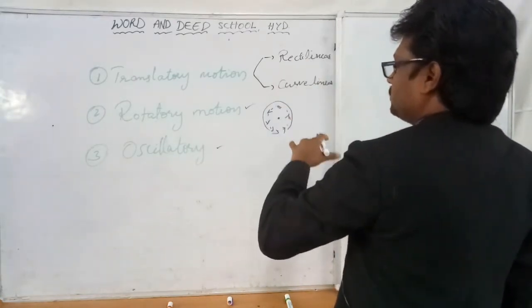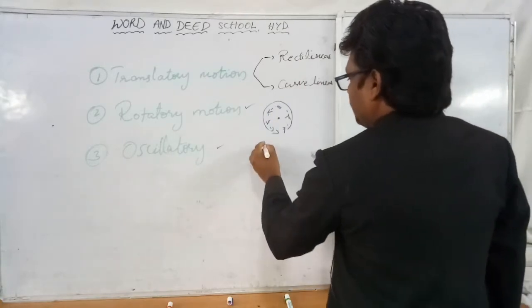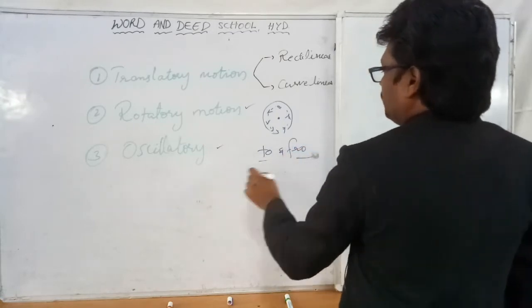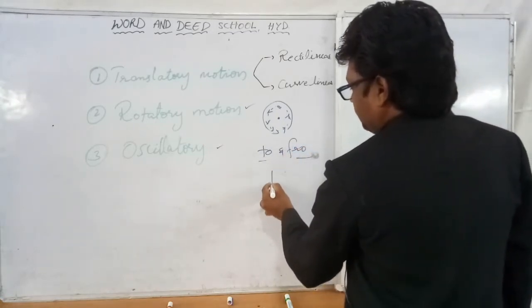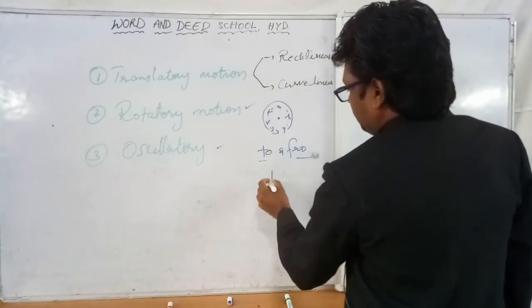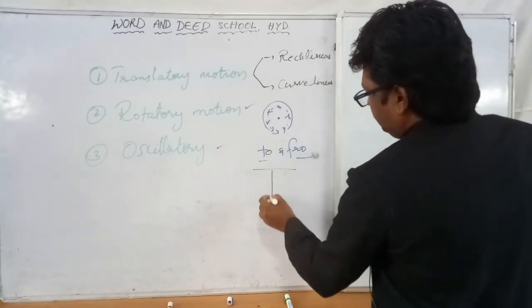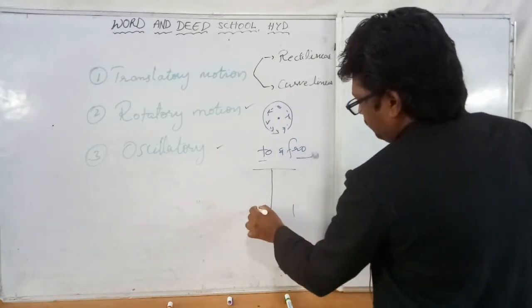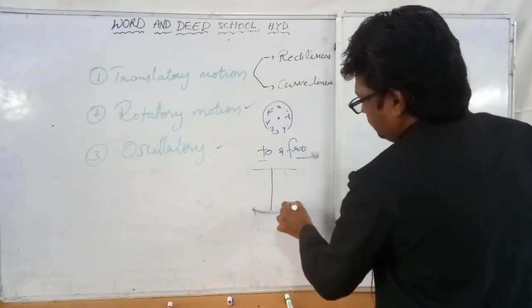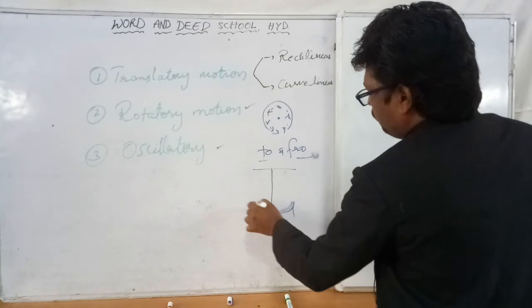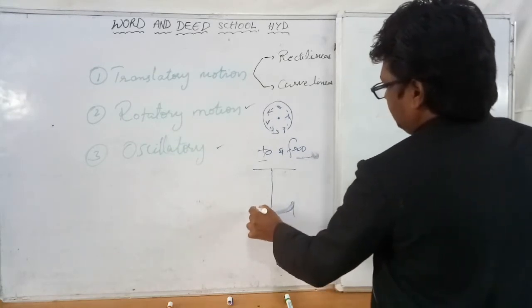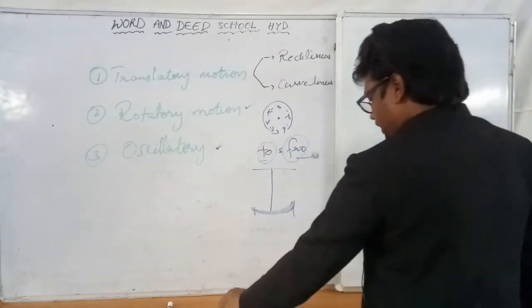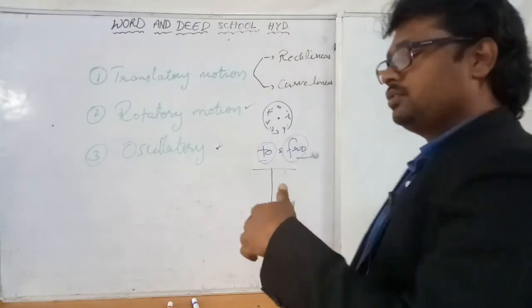Oscillatory motion: all parts of that moving body move in a to-and-fro motion. Example: the pendulum of a clock moves between two points in a fixed distance, always following the same path. This type of motion is called oscillatory motion. There are various examples if you think about it.